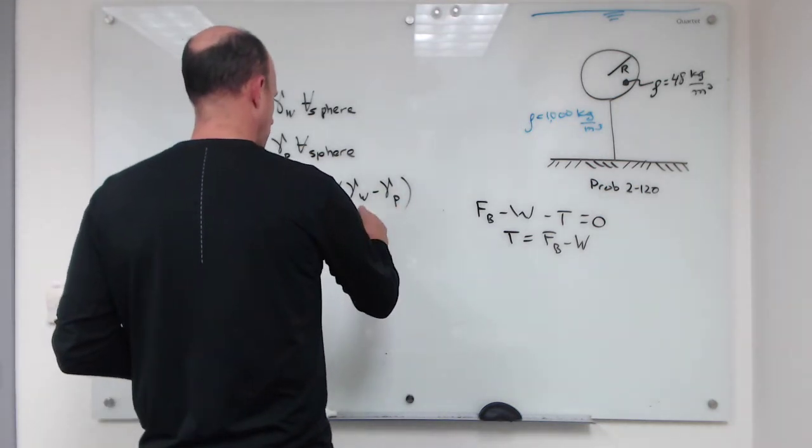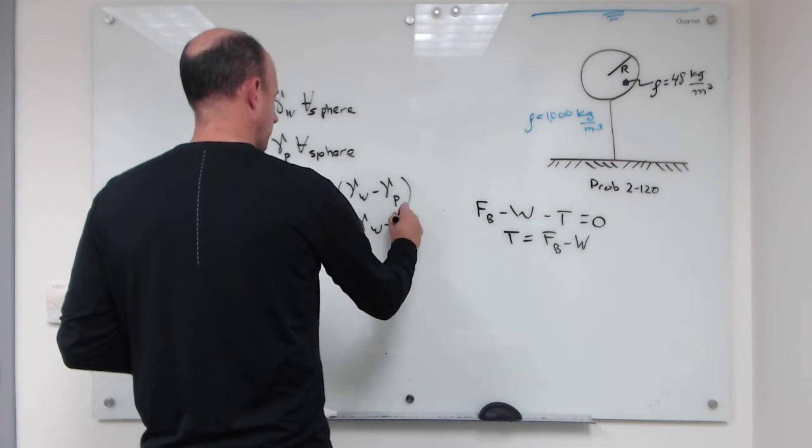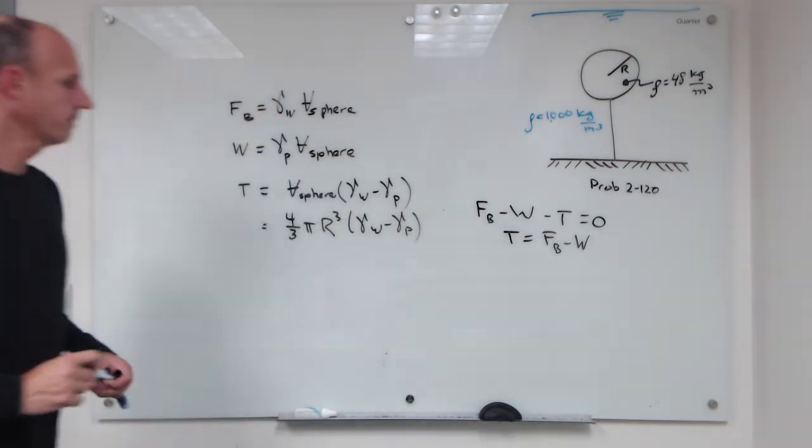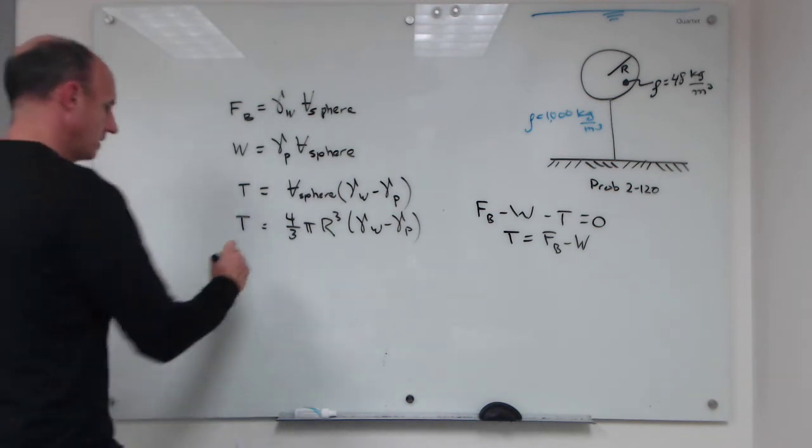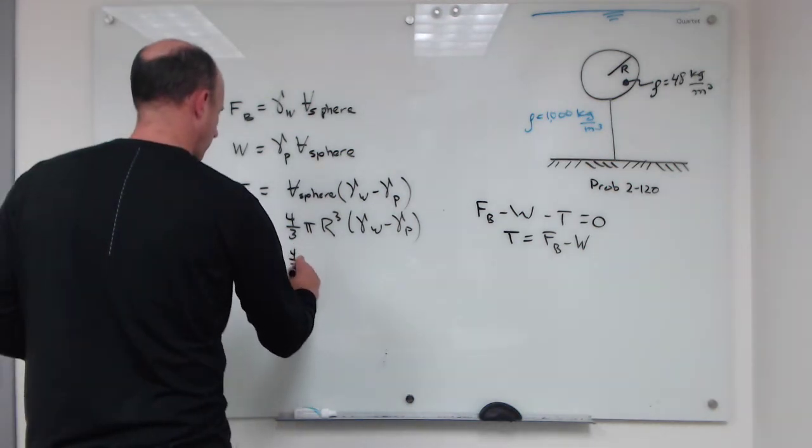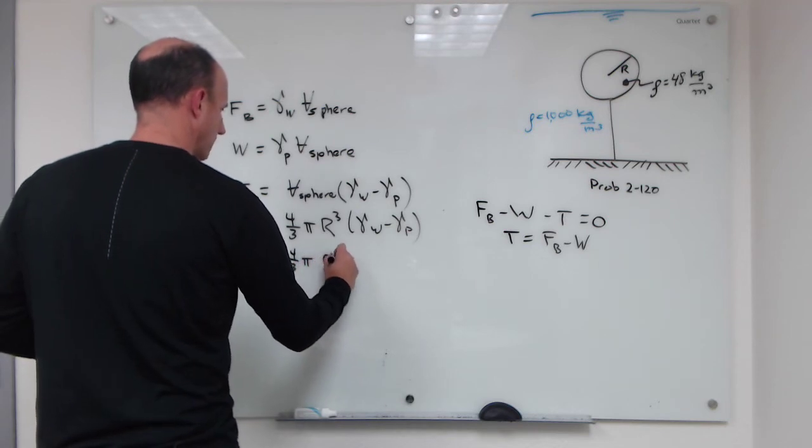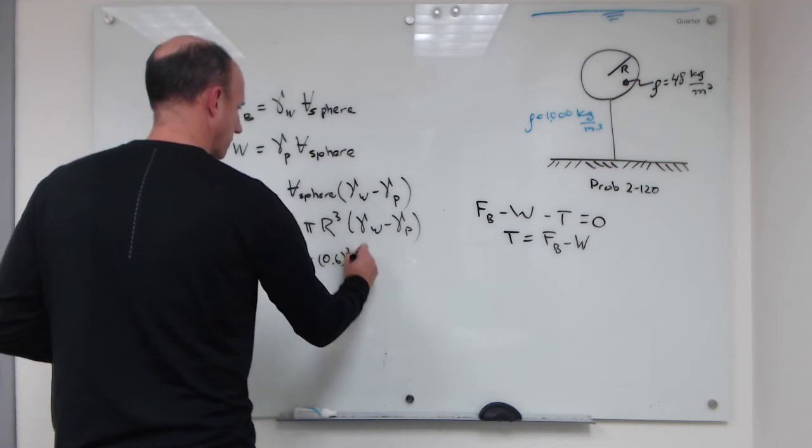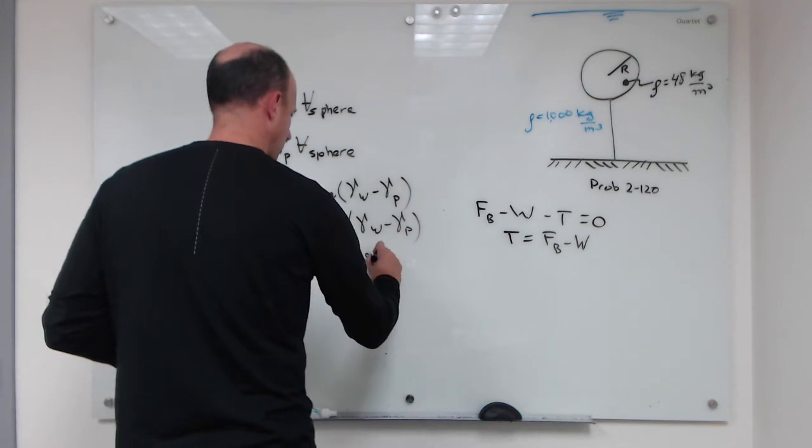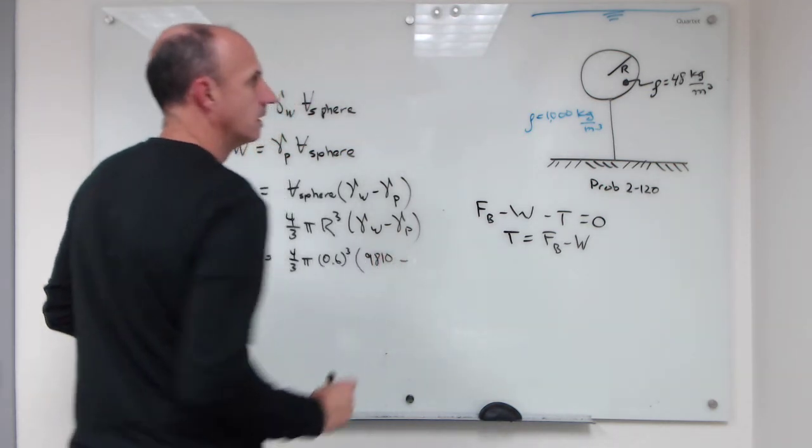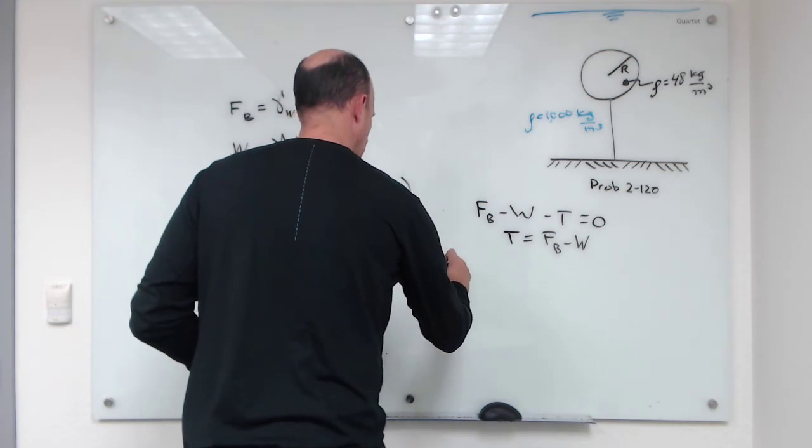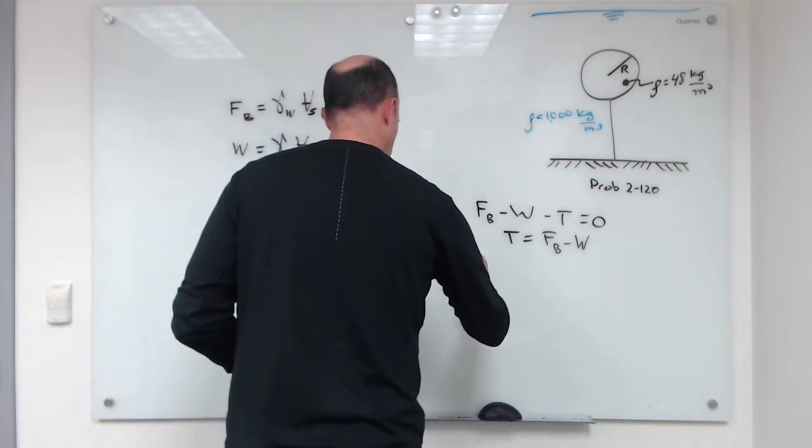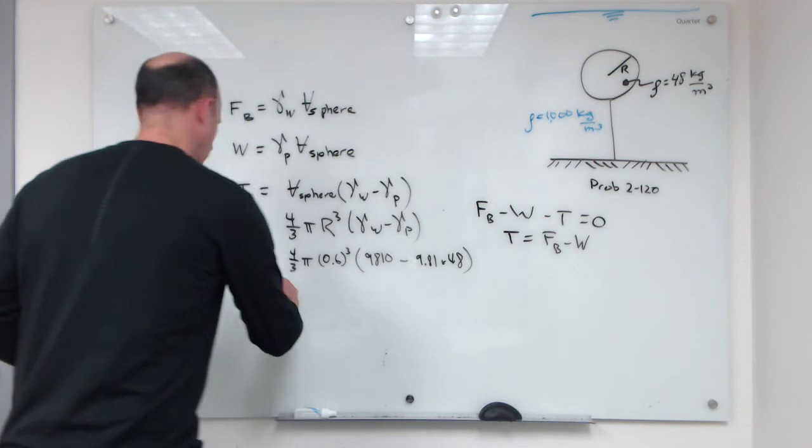Okay, so now I have a formula for the tension, and I put in numbers: four-thirds times pi times 0.6 to the third power times 9810 minus 9.81 times 48. I will get that the tension is equal to 8.45 kilonewtons.